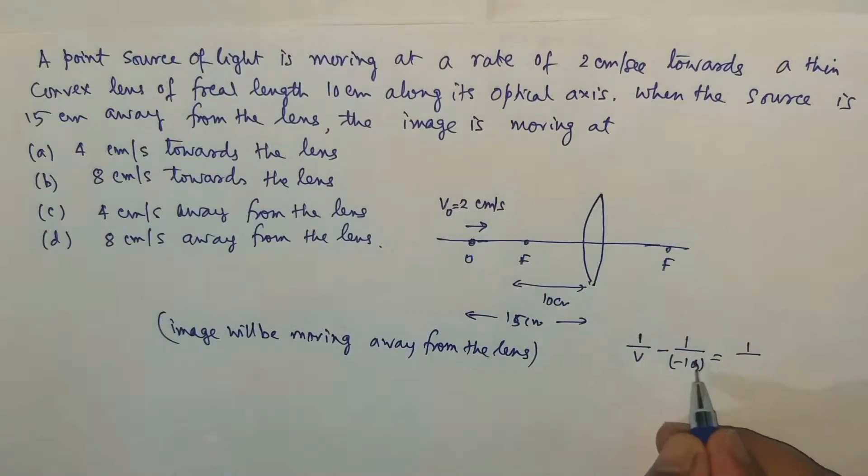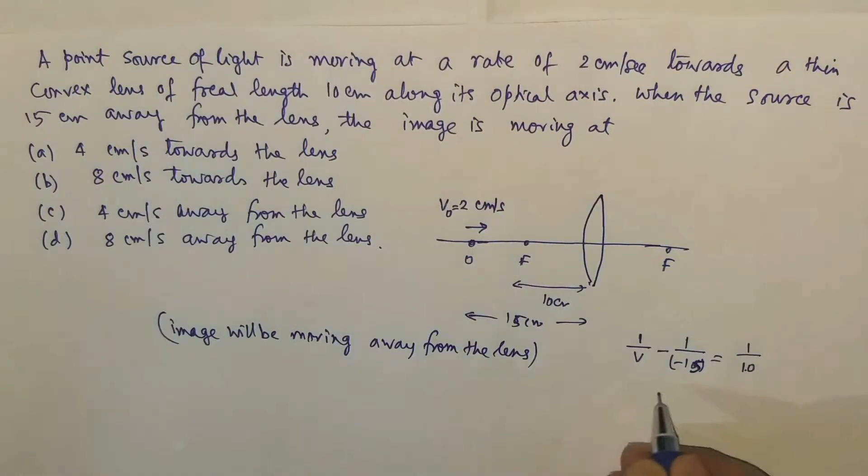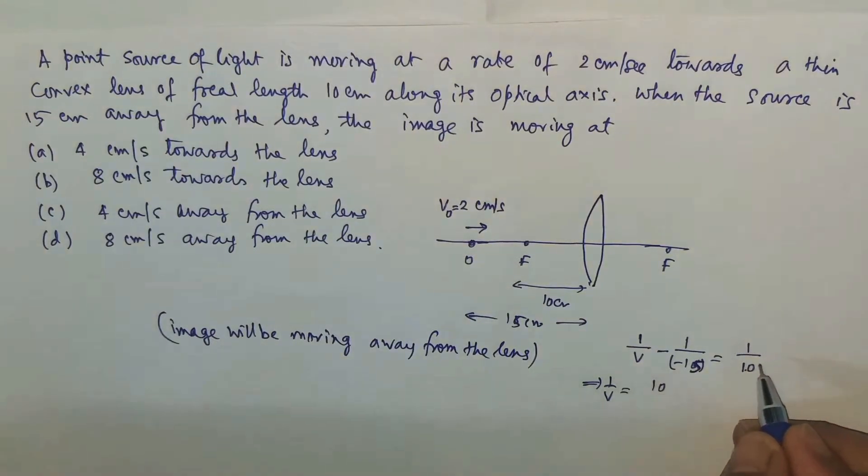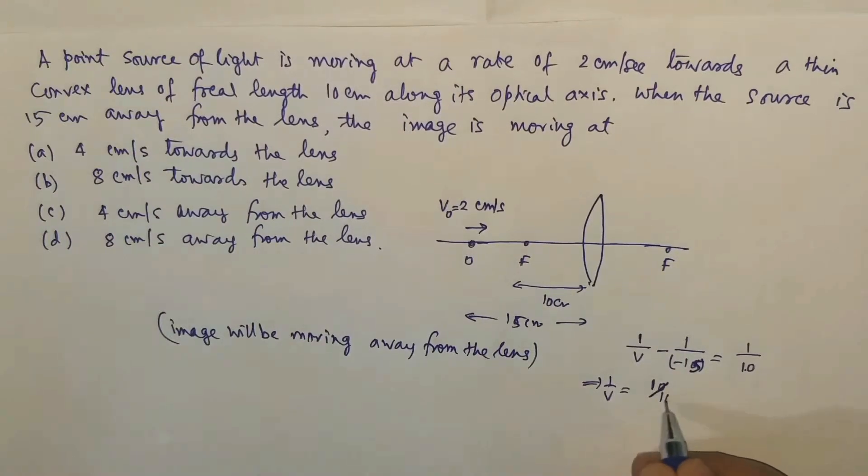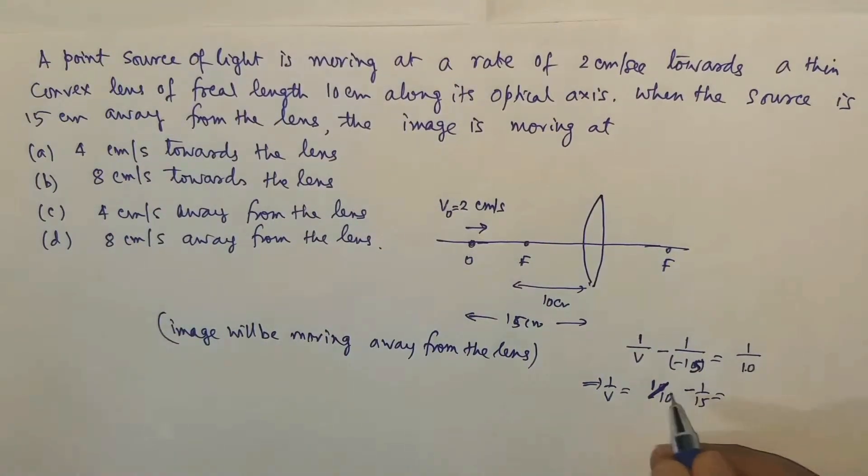Then after putting all these values, we have 1/v is equal to 1/10. 1/v will be equal to 1/10 - 1/15, so 1/10 - 1/15, so this will become 15 - 10, that is 5 divided by 150.